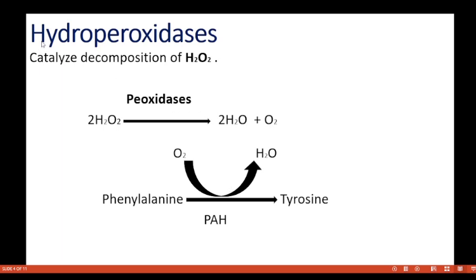The next subclass is hydroperoxidases. They catalyze the decomposition of hydrogen peroxide. Peroxidases convert hydrogen peroxide to water and oxygen. Phenylalanine is converted by phenylalanine hydroxylase to tyrosine, and the hydrogen acceptor here is an oxygen molecule.